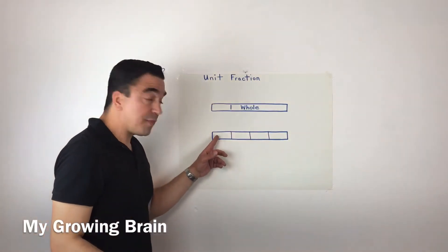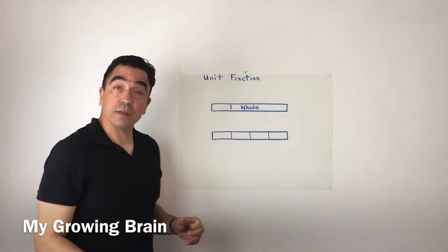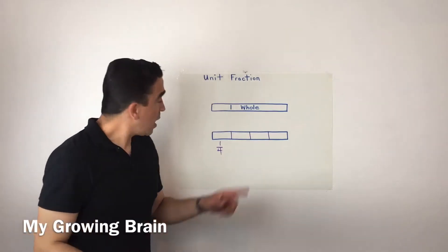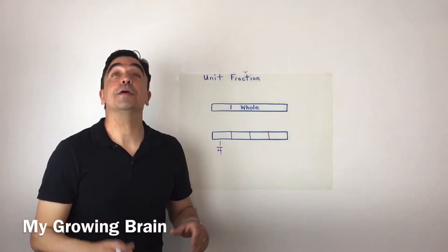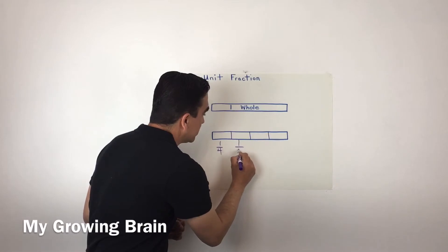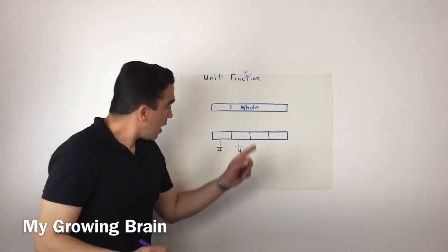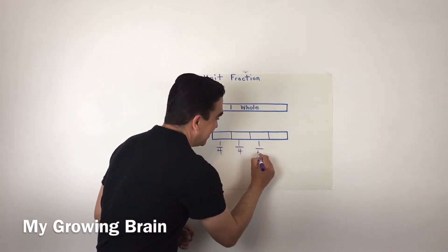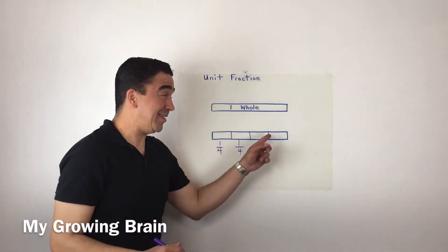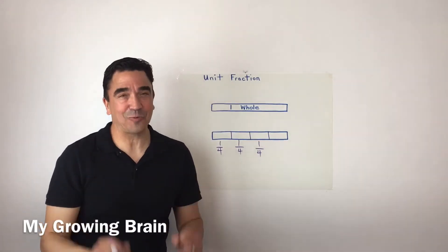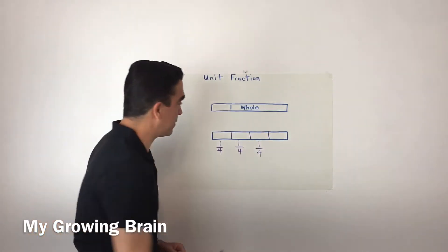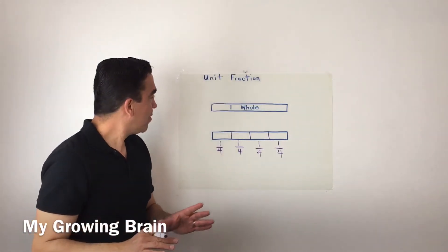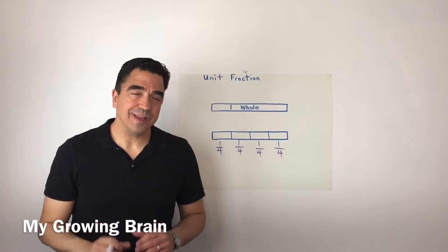So this part is one-fourth, this part is one-fourth, this part is one-fourth. Can you guess what that part is? That's right, one-fourth. So once again, we broke our one whole into four equal parts.